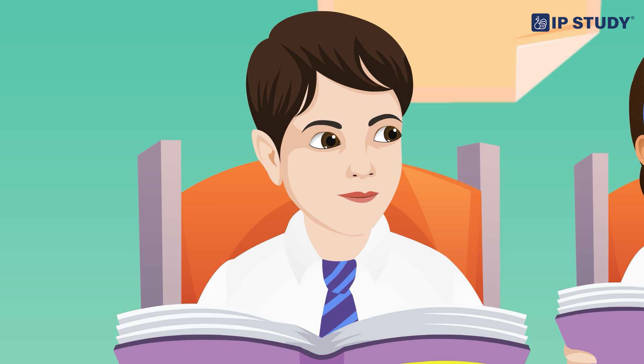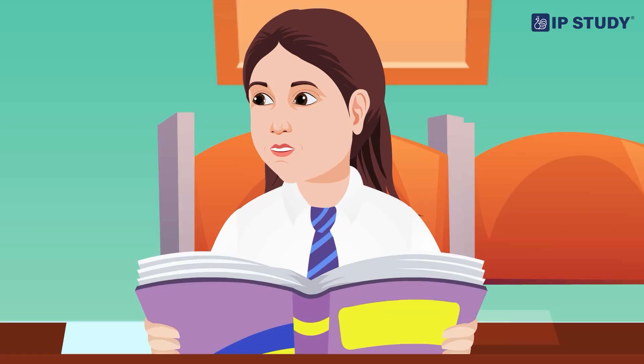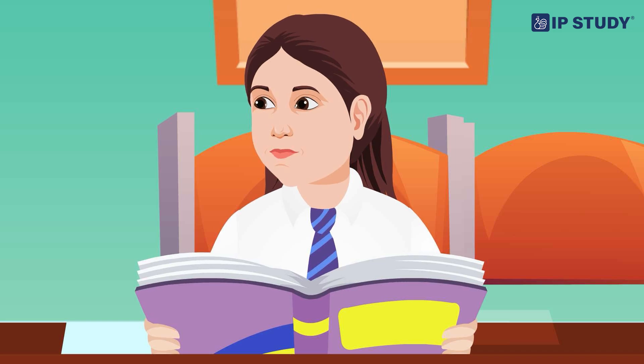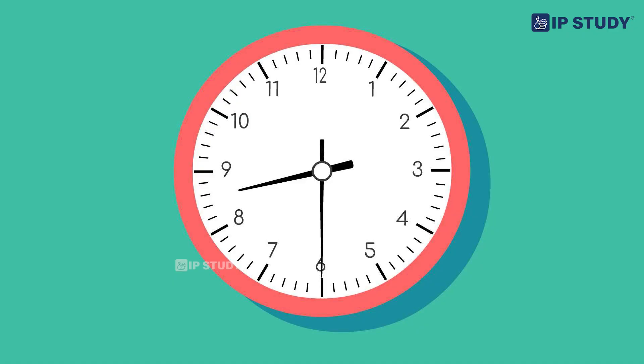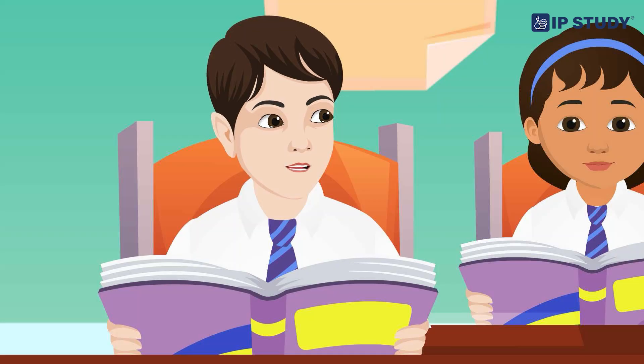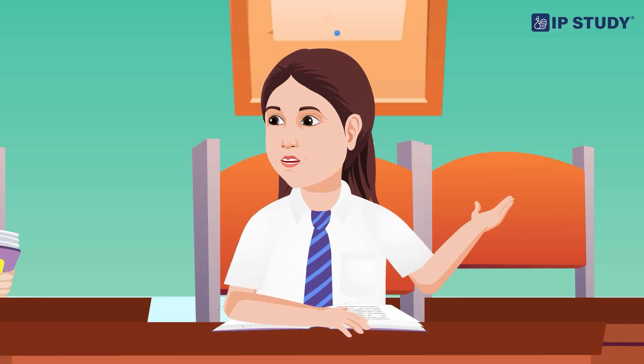Look at the clock up there, it has numbers from 1 to 12. And do you see the two hands on the clock? One is long and the other is short. The short hand is called the hour hand and the long hand is called the minute hand. Together, they show us what time it is.